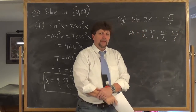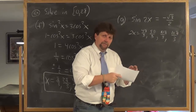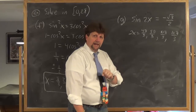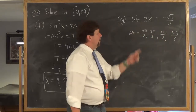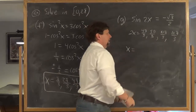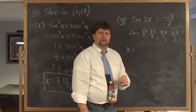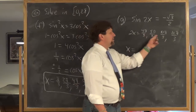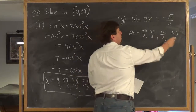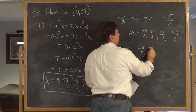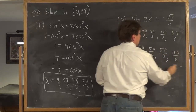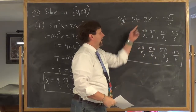We want x, not 2x, so divide each value by 2 (or multiply by 1/2). Dividing 4π/3, 5π/3, 10π/3, and 11π/3 by 2 gives x = 2π/3, 5π/6, 5π/3, and 11π/6. These four solutions are all in the interval 0 to 2π.